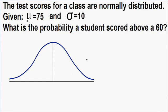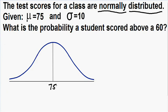Let's get started with an example that is somewhat similar to the example from my last video, but here we're going to solve it using z-scores. It says that the test scores for a class are normally distributed, so we can use our normal curve. The average, which is the Greek letter mu, is equal to 75, and the standard deviation, which is the Greek letter sigma, is equal to 10. The average always goes directly in the middle of the normal curve.